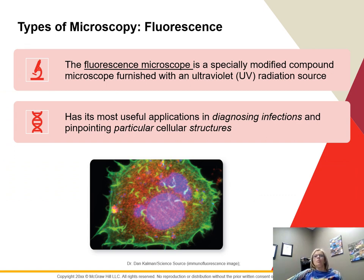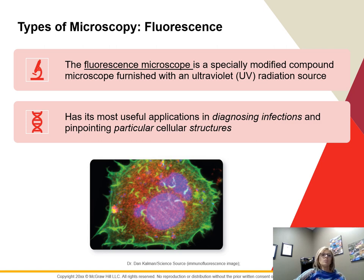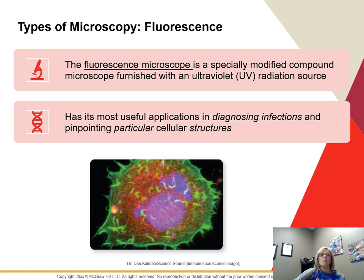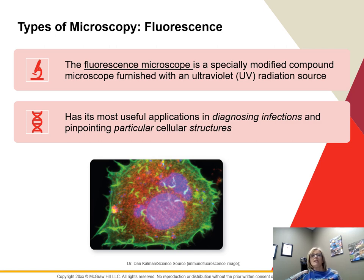The fluorescent microscope is a modified compound microscope with a UV light source. We use fluorescent dyes — fluorescent acridine and different minerals that fluoresce on their own — which emit visible light when hit with ultraviolet radiation. The specimen is coated with fluorescence, and the UV radiation causes it to give off light that forms its own image, usually intensely red, green, or blue against a dark background. This is really useful for diagnosing infections or looking at particular cell structures.